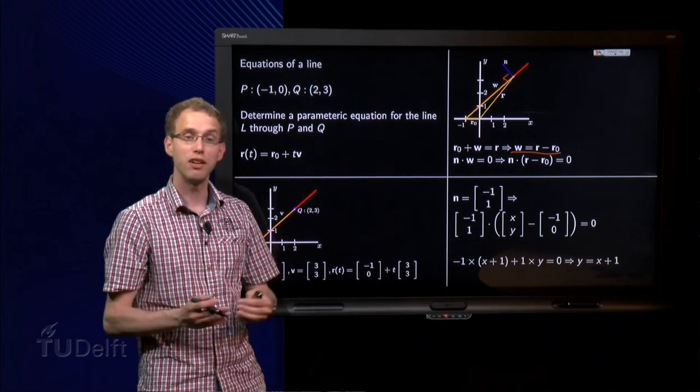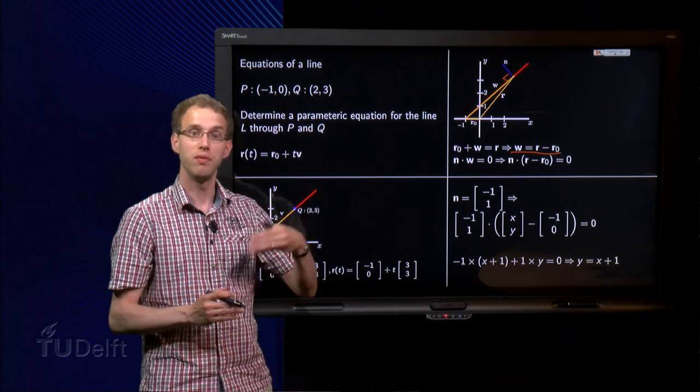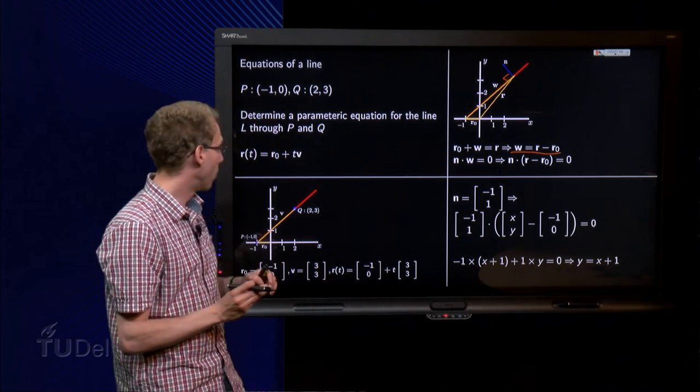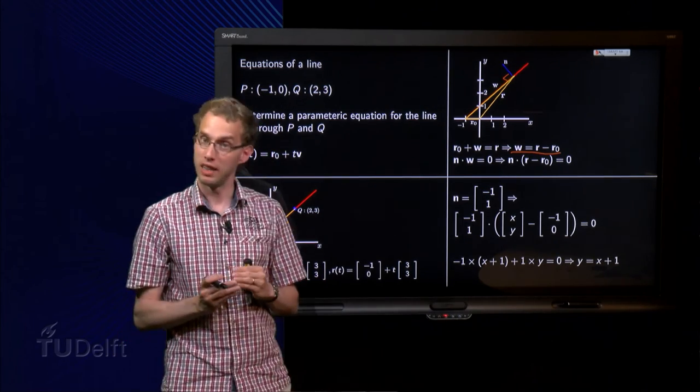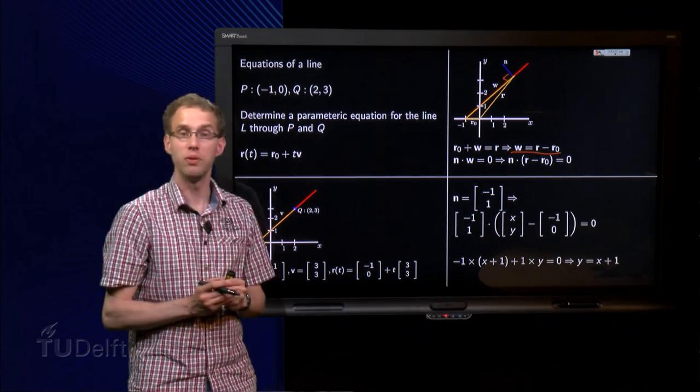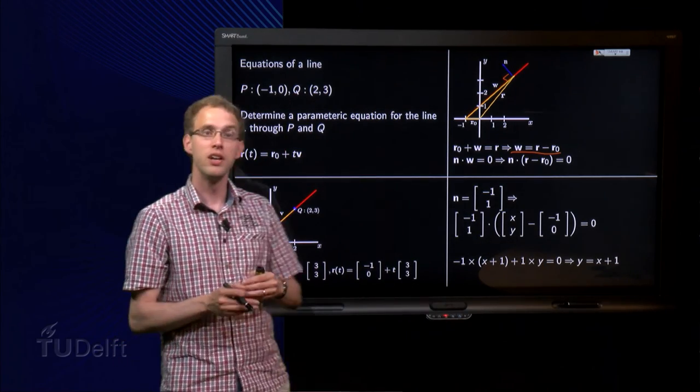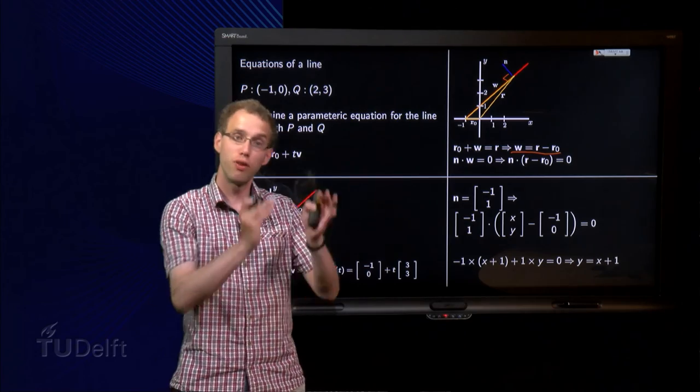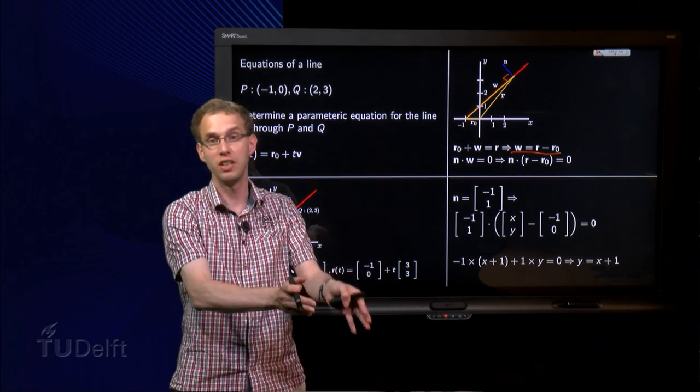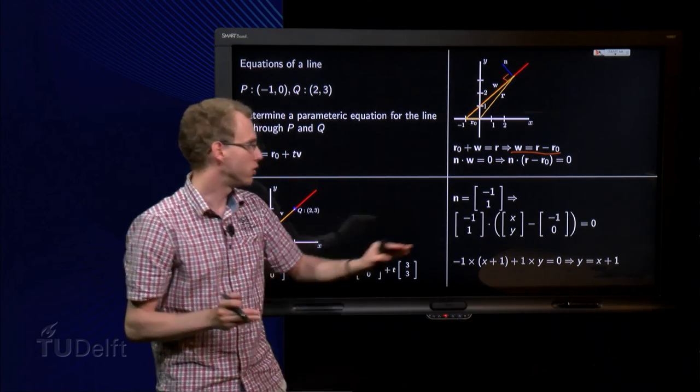which is exactly of the form y equals ax plus b, with a equals 1. The slope, indeed 1. And 1, the intersection with the y-axis also as 1. So this is how you can get back from your parametric equation, your normal equation, which you are used to.